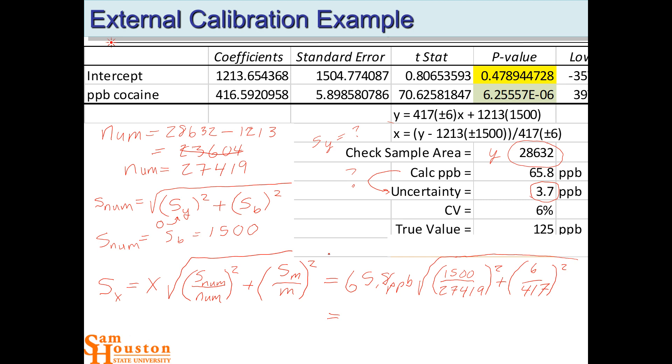So what did we end up with? 3.712. Good. And notice that you get the answer in parts per billion because of this X value is in parts per billion.